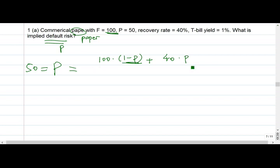And that's the expected part. And the discounted part is 1 plus the T-bill rate, 0.01. One equation, one unknown. Solve for P. I'm not going to solve it.